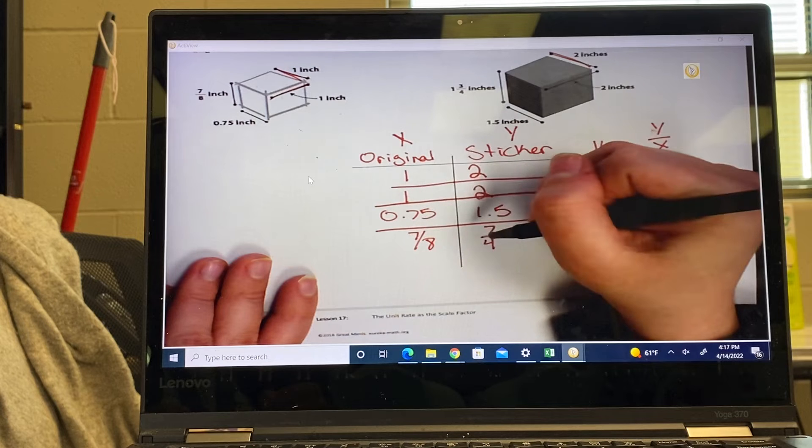And a fourth times a half equals one-eighth. And two times a half equals one. So each time I'm multiplying by my scale factor to get my answer. That's what you're going to do on the problem set today.